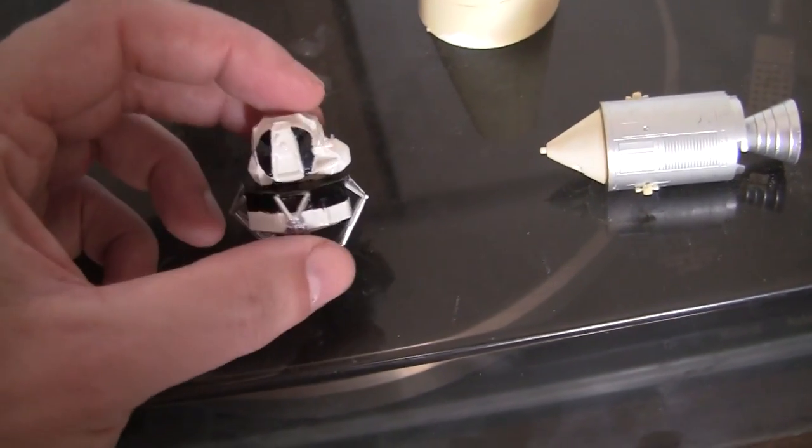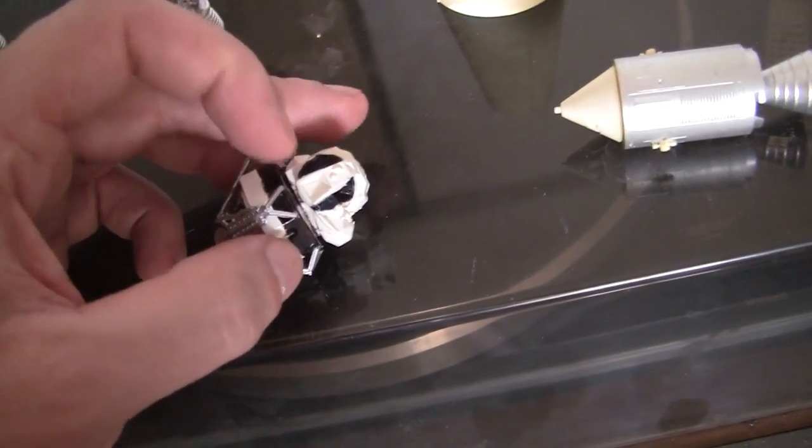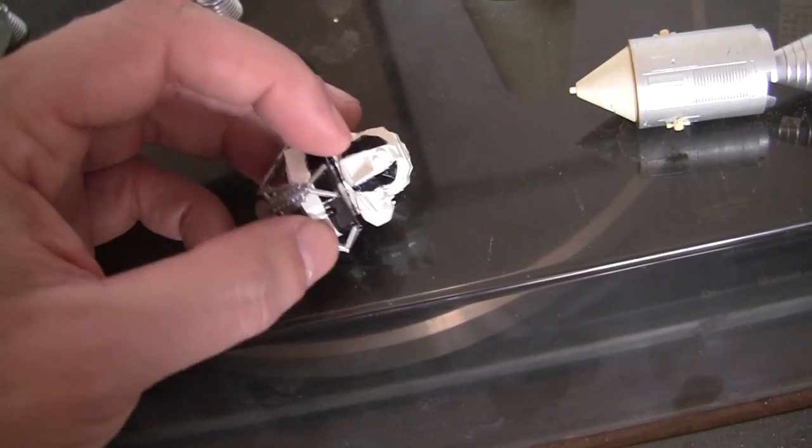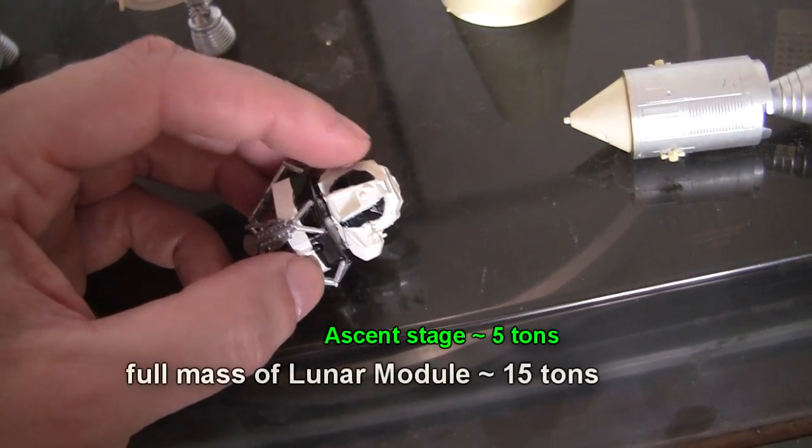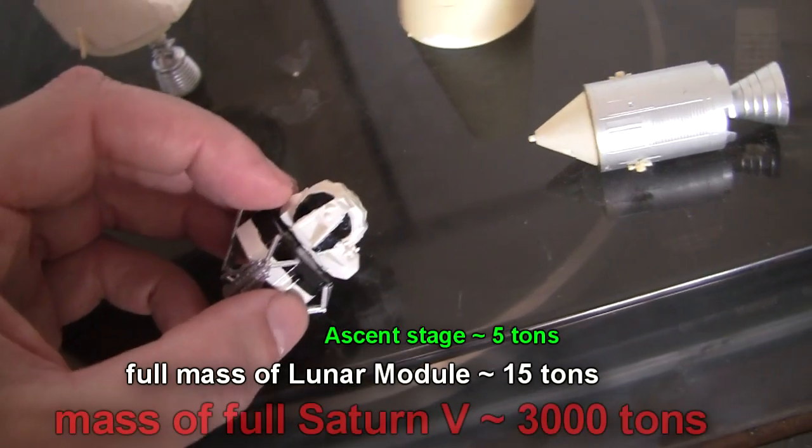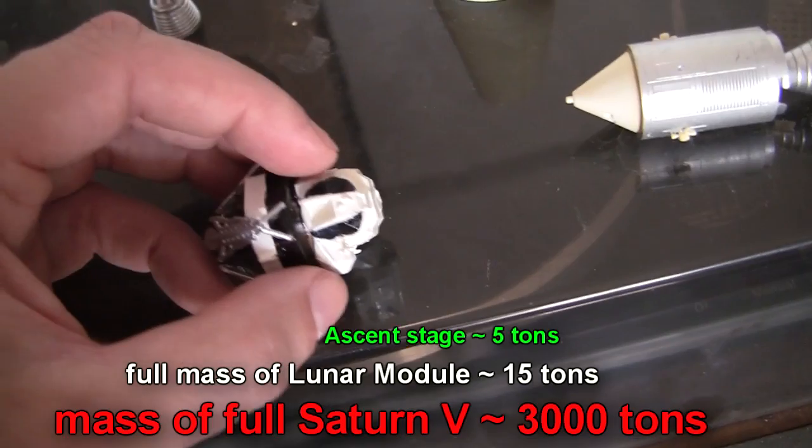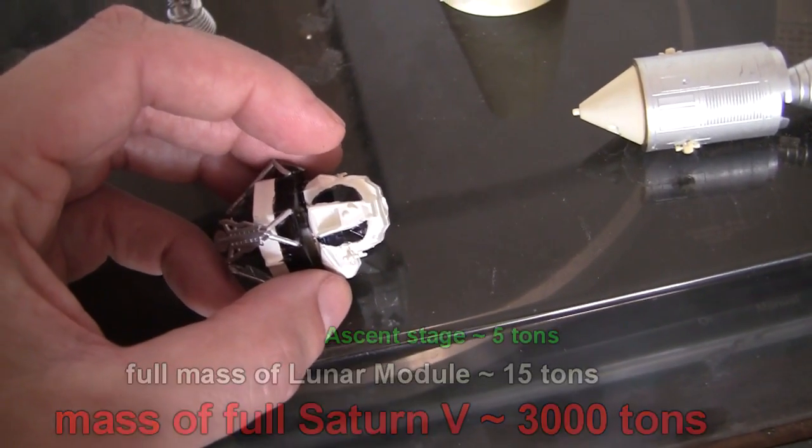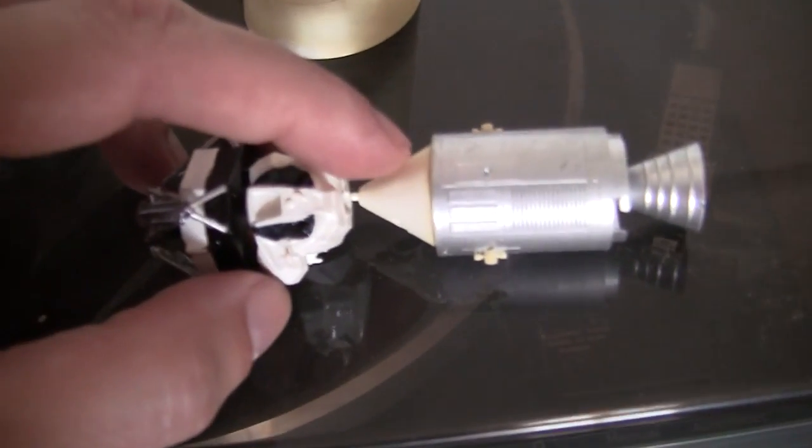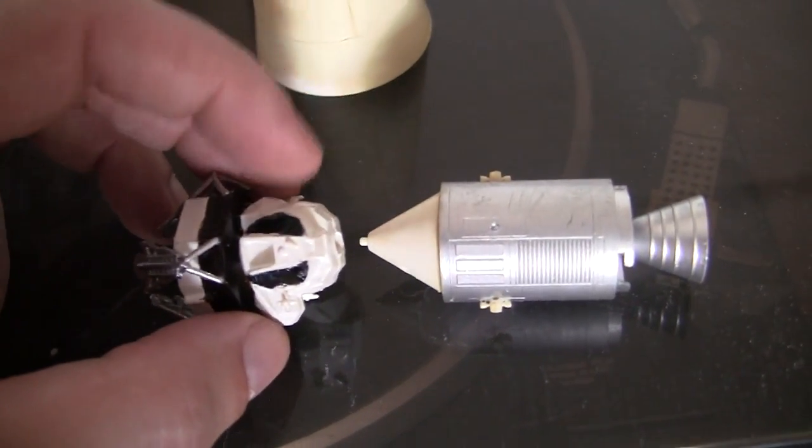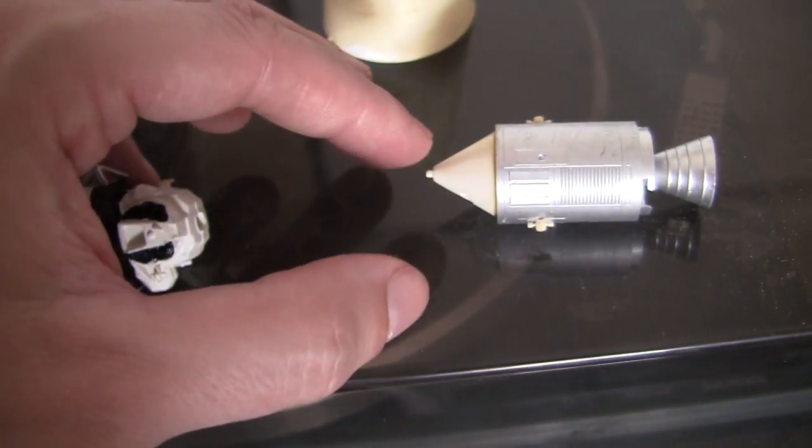And then the men did their stuff on the lunar surface. And when they had finished, they all get back in this thing. And the top bit separates off. So you get an idea of just how much, yeah, there's two men in there. And the rocket, the fuel, and everything else. And that's based around three men sitting down. Anyway, so this bit gets back up to orbit. At which point it docks with this.